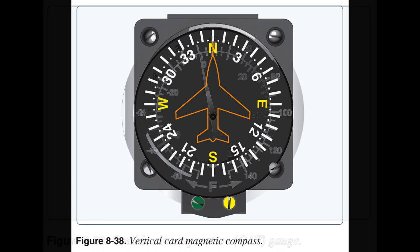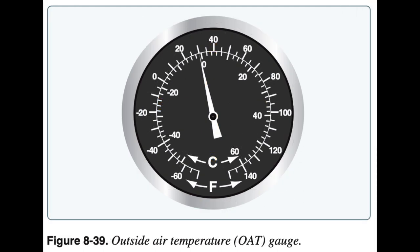The outside air temperature (OAT) gauge is a simple and effective device mounted so that the sensing element is exposed to the outside air. The sensing element consists of a bimetallic-type thermometer in which two dissimilar materials are welded together in a single strip and twisted into a helix. One end is anchored into a protective tube and the other end is affixed to the pointer, which reads against the calibration on a circular face. OAT gauges are calibrated in degrees Celsius, degrees Fahrenheit, or both. An accurate air temperature provides the pilot with useful information about temperature lapse rate with altitude change.